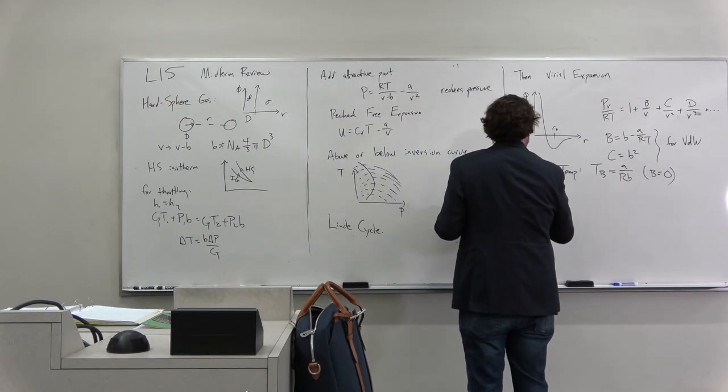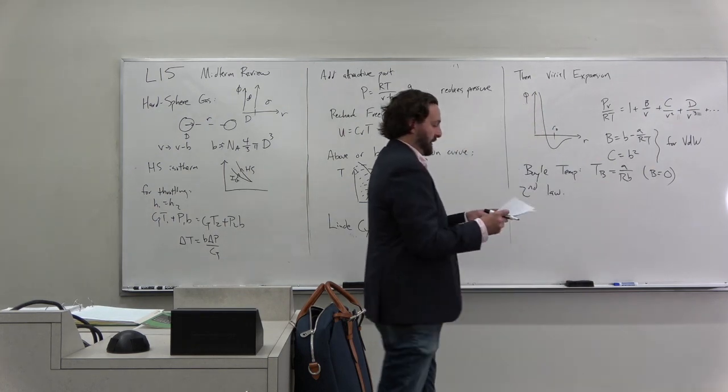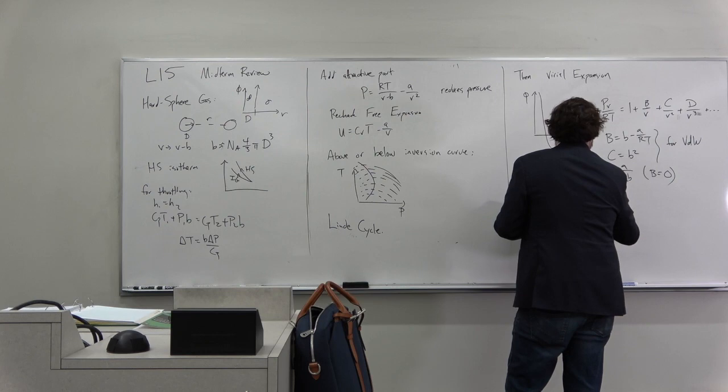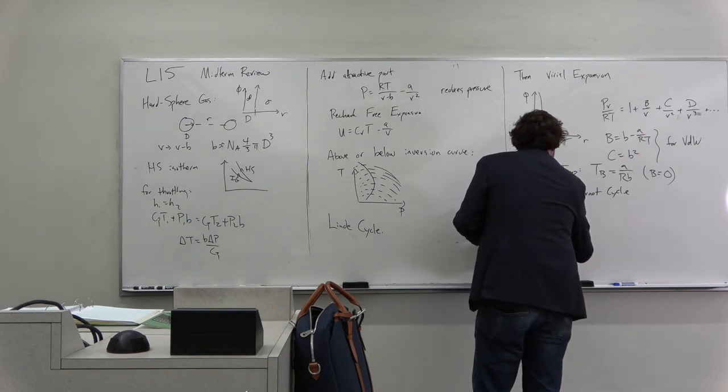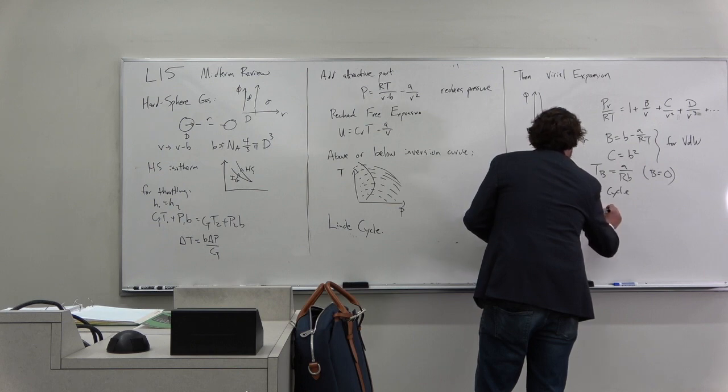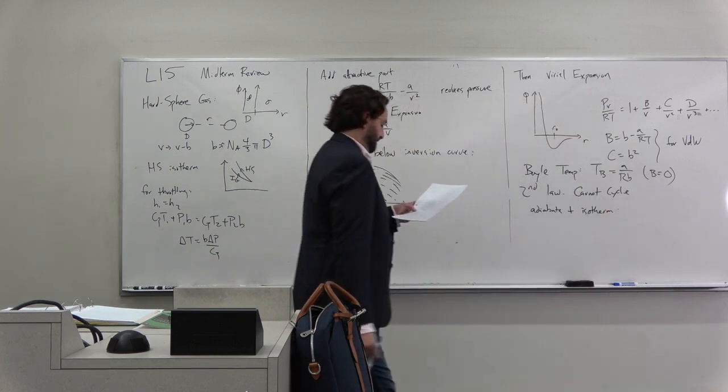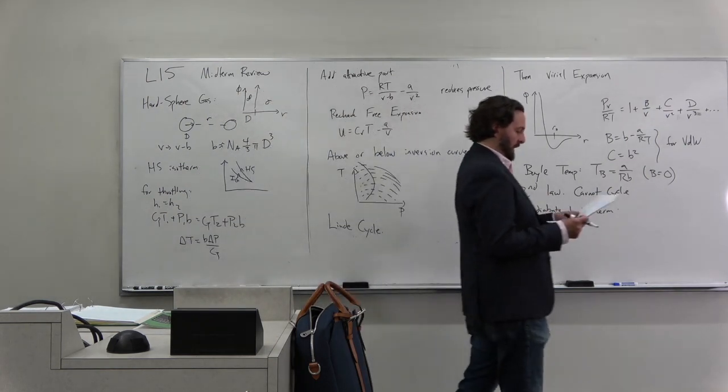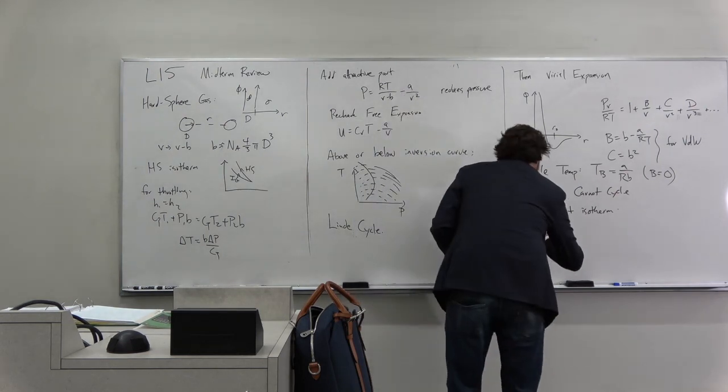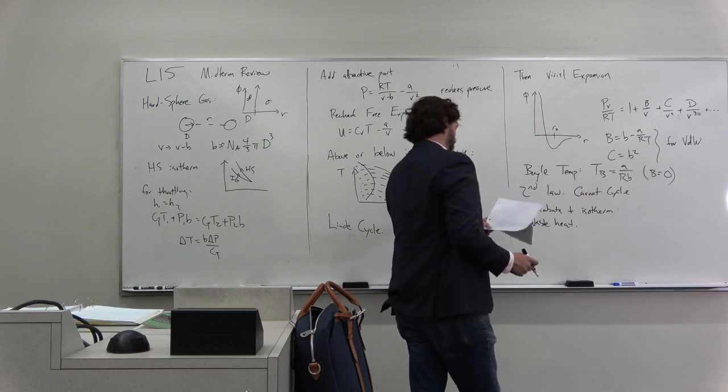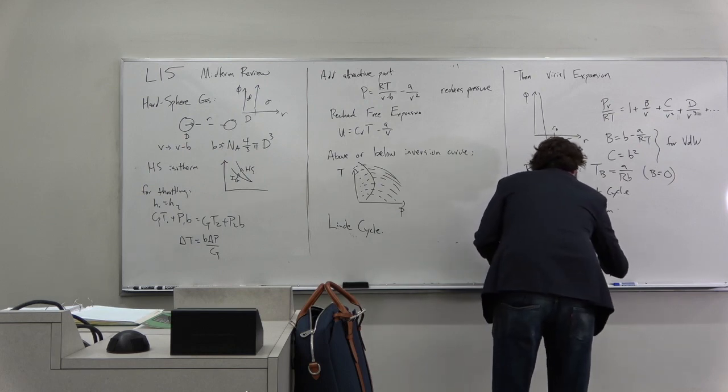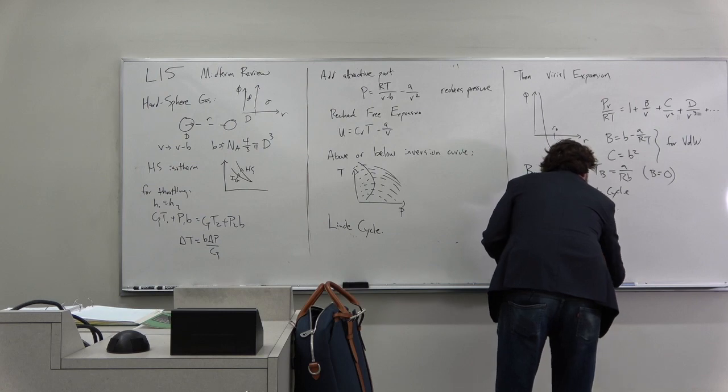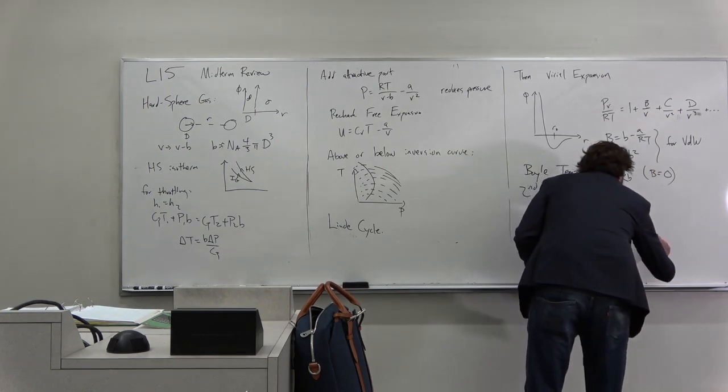We talked about the second law quite a bit. That was more recent, so you should hopefully remember. We talked about the Carnot cycle, adiabats and isotherms combining them to make the Carnot cycle. We asked why was a Carnot cycle consistent with the second law - it was because there was waste heat. We talked about the efficiency of a Carnot engine, which was work over QH, which was QH minus QC over QH, which ended up being TH minus TC over TH.